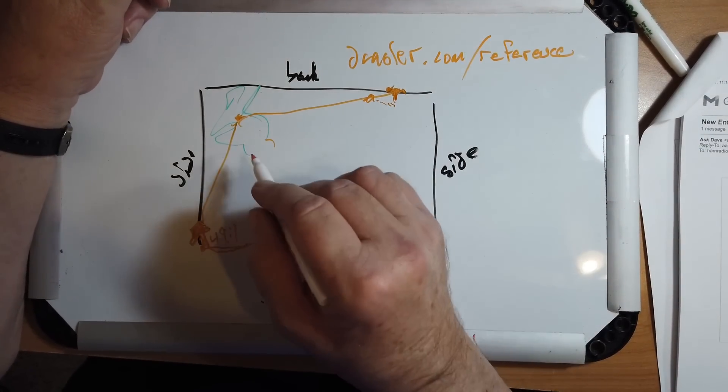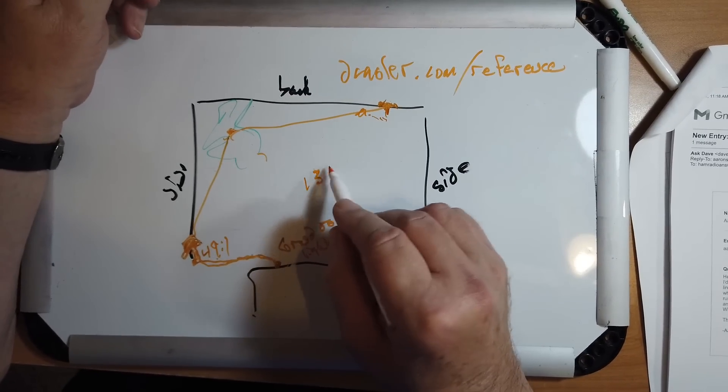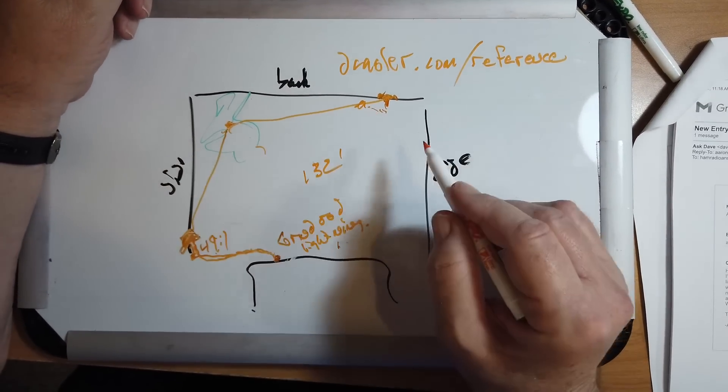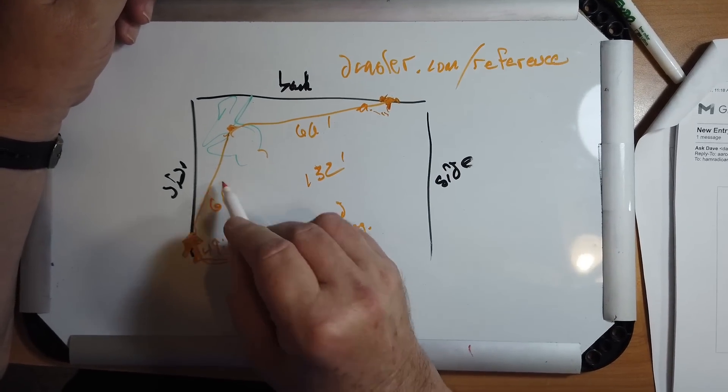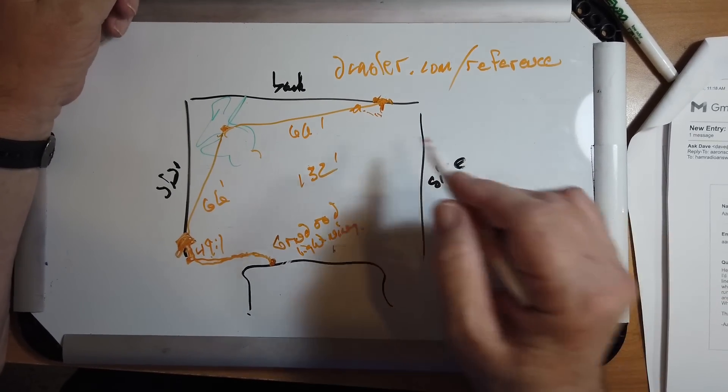So now this way, you've got, let's see, it's 132 feet from here through here to here. So it's 66 feet on a side. And you will have a nice antenna.